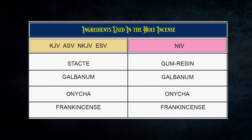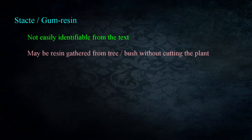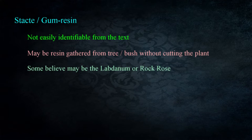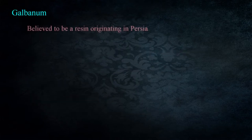The spices listed show some variation in translation. The KJV, ASV, ESV, and NKJV render these as stacti, onycha, galbanum, and frankincense, while the NIV renders them as gum resin, onycha, galbanum, and frankincense. The first spice, stacti, isn't easily identifiable but may refer to resins gathered from a bush or tree without cutting the plant. Some believe it refers to the labdanum or rock rose, others to a type of cinnamon, while others believe it to be myrrh. In any case it would have been a sweet aromatic element.